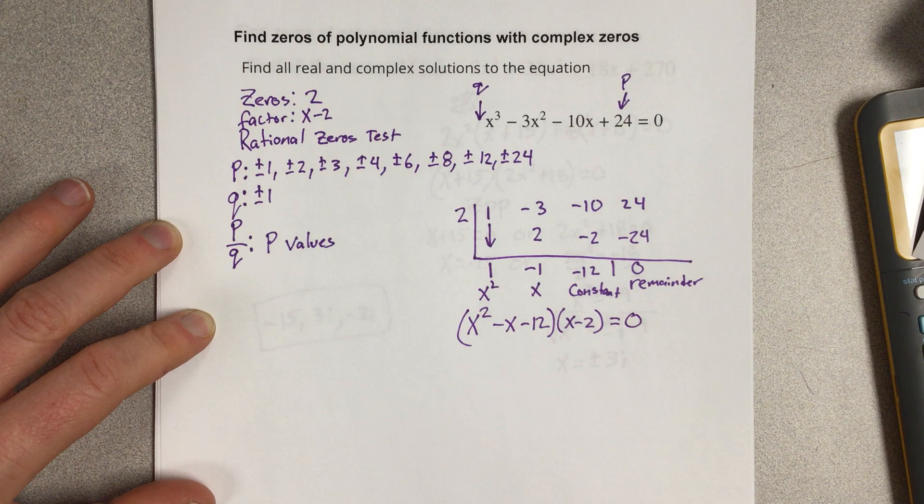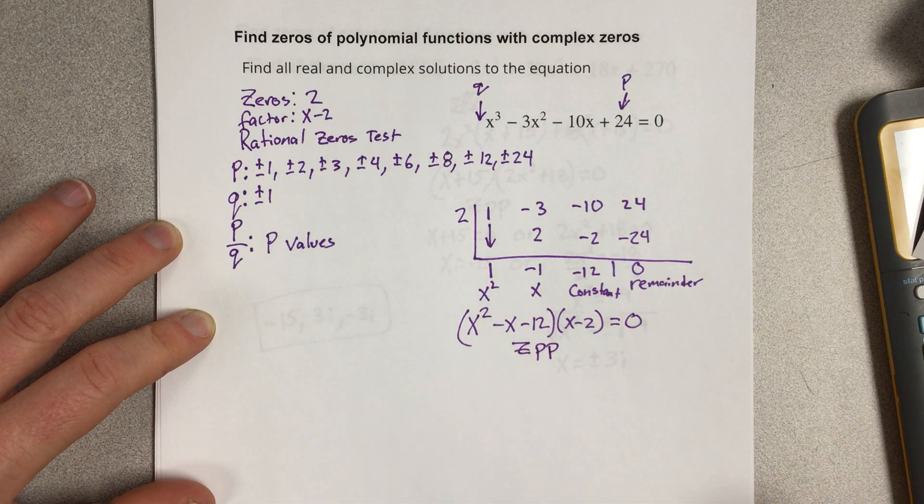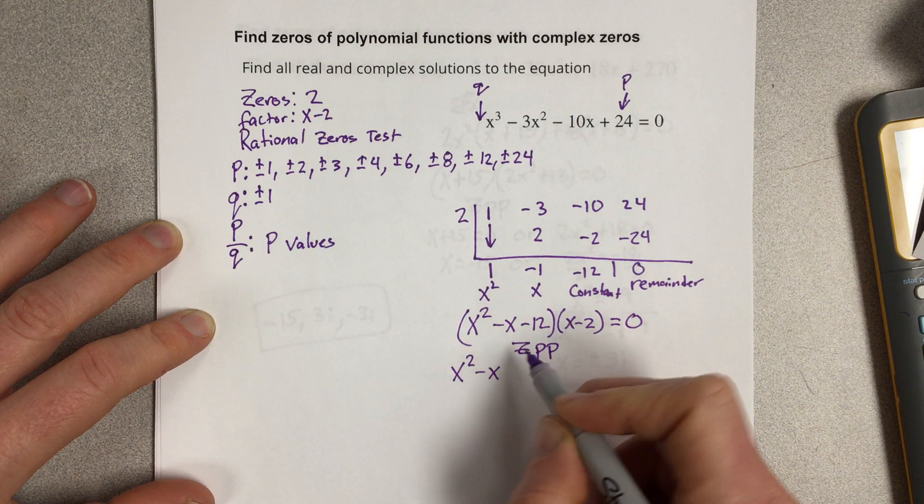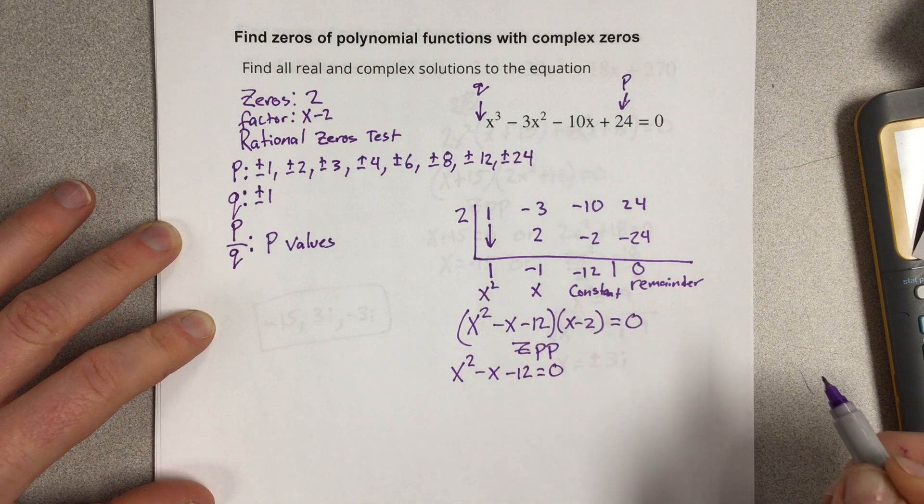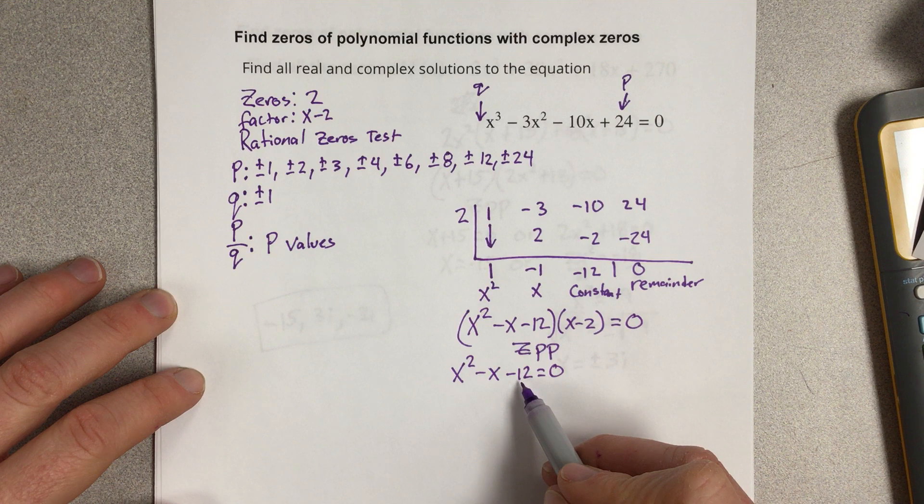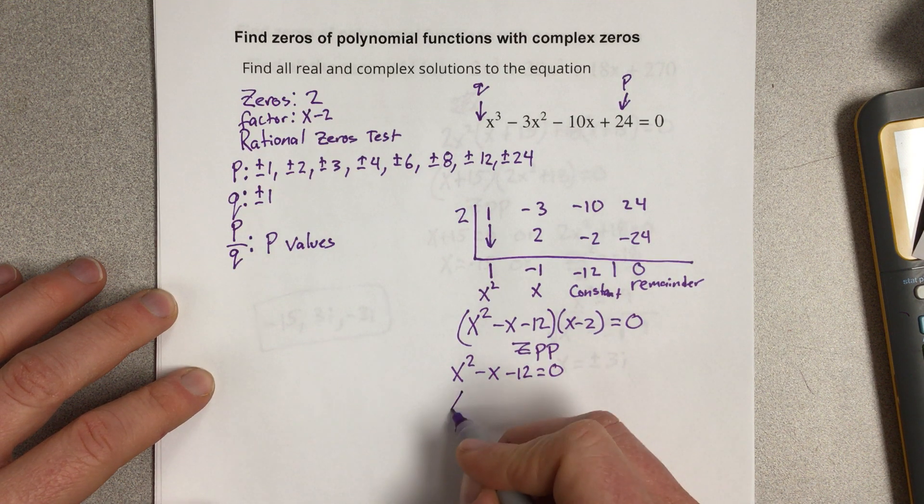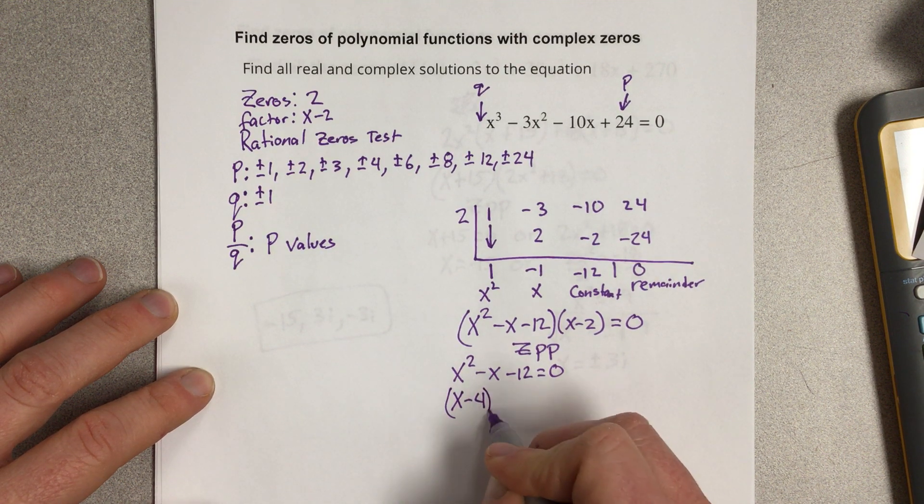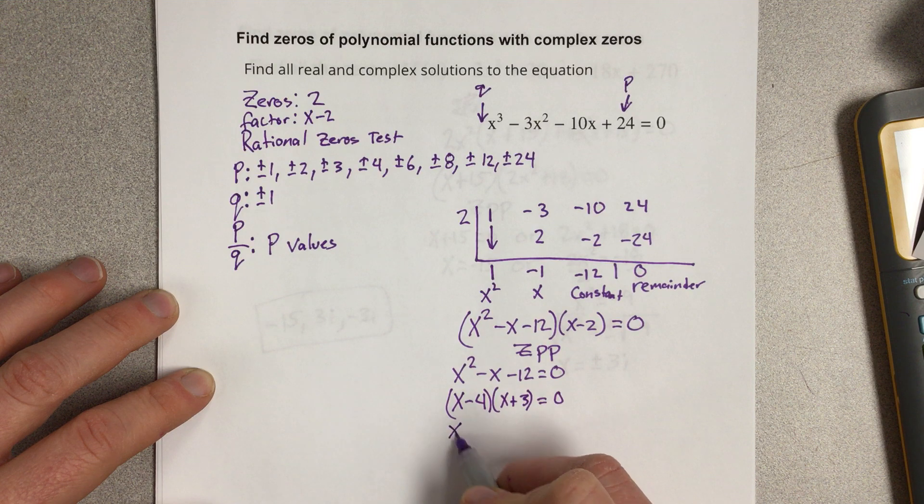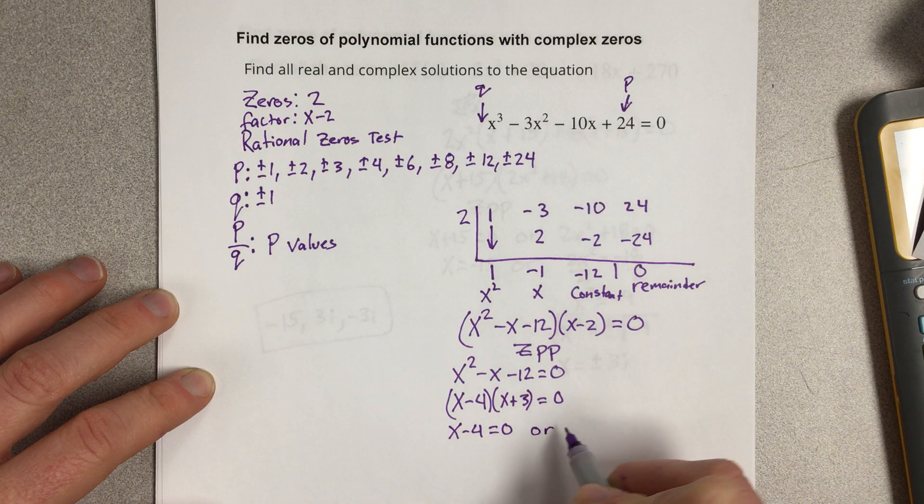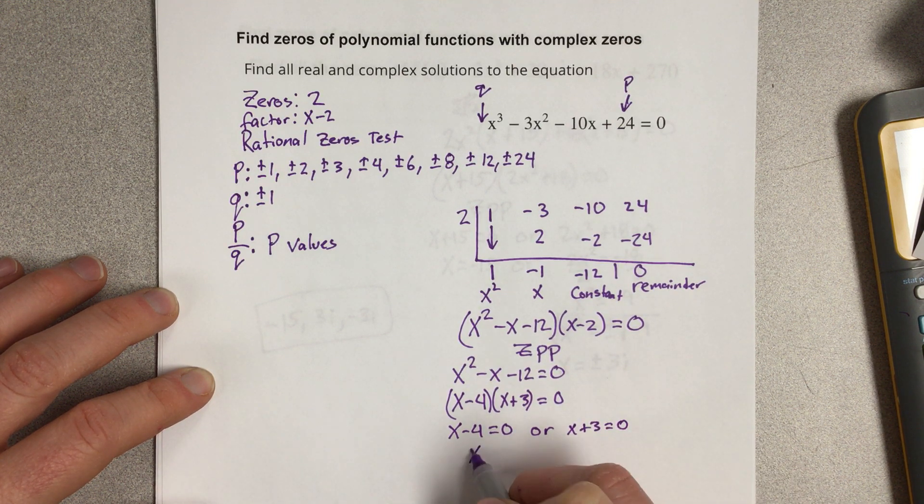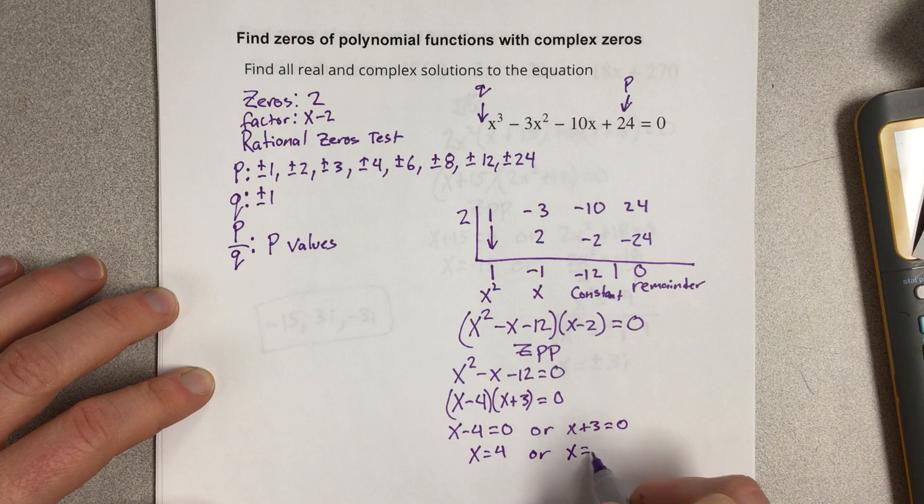We're going to set that equal to 0 and use ZPP to find the other solutions. So if I use zero product property here, I get x² - x - 12 = 0. I'm going to ignore this part. I already know the zero there. Let's see if we can factor this. We could use -4 + 3. So that would be (x - 4)(x + 3) = 0. So if I say x - 4 = 0 or x + 3 = 0, x = 4 or x = -3.